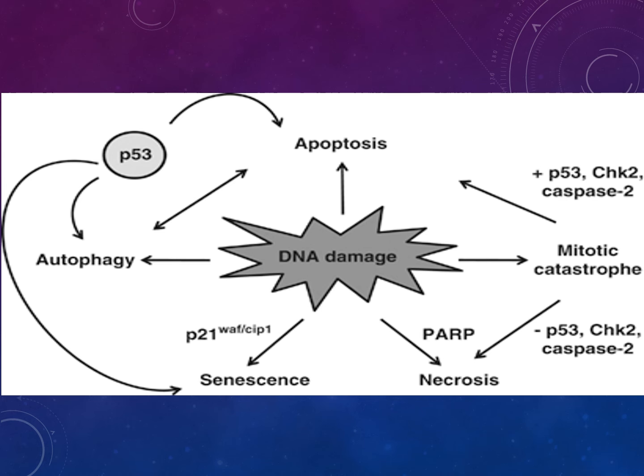Cells in mitotic catastrophe can go on to apoptosis or necrosis. There is still a lot to discover about this process, but that's the end of the video today — I hope you've had fun and look forward to the next one.